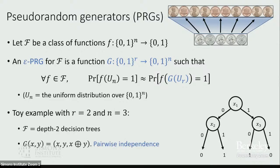Here's a toy example to clarify the idea. We could take script F to be the class of all depth-two decision trees. Here's a pseudorandom generator that stretches two bits to three bits and fools this model: G of X, Y equals X, then Y, then the XOR of X and Y. These three bits — X, Y, and their XOR — are the traditional example of three random variables that are pairwise independent but not mutually independent. Because they're pairwise independent, they fool any depth-two decision tree, a decision tree that looks at just two bits.